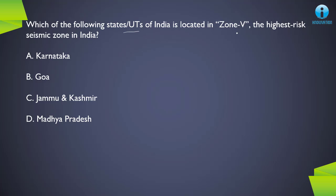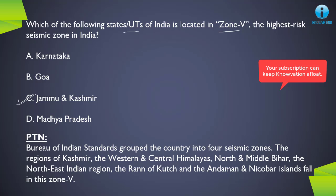Next question: which of the following states or union territories of India is located in Zone 5, the highest risk seismic zone? Zone 5 is where the highest intensity earthquakes are most likely to occur. The correct answer is C, Jammu and Kashmir. The Bureau of Indian Standards grouped the country into four seismic zones: Zone 2, Zone 3, Zone 4, and Zone 5 — with Zone 5 being the highest risk. The region of Kashmir, western and central Himalaya, northern middle Bihar, northeastern India, Rann of Kutch, and the Andaman and Nicobar Islands fall in Zone 5. Zones 2, 3, and 4 carry comparatively lower intensity risk.